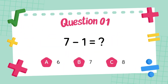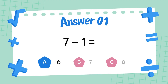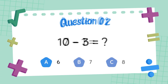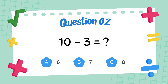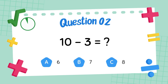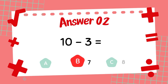What is 7 minus 1? The answer is 6. What is 10 minus 3? The answer is 7.